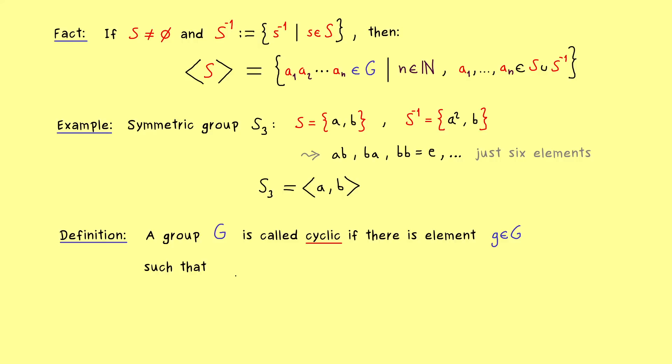And then you construct the smallest possible subgroup that contains this element g. And then if it turns out that this subgroup is actually the whole set G, then we call G cyclic. So you could say this is a not so complicated group, because it's determined completely by just one element.